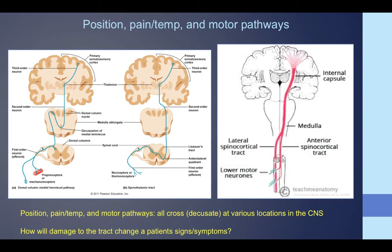These are the three main pathways or tracts in the central nervous system: position and proprioception on the left, pain and temperature in the middle, and the motor pathway on the right. They all cross over at some point — either in the medulla or in the spinal cord for the spinothalamic tract, which handles pain and temperature. This is why damage to the cerebral cortex from a stroke causes symptoms on the opposite side of the body. If the spinal cord is damaged after the tract has already crossed over, the deficit will be on the same side.